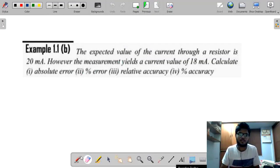Now, you do this homework problem. Expected value of a current through a resistor. See carefully. Expected value given as 20 milli amperes. However, measurement yields 19. It means it is our measured value. I have given a hint. Now, try. Calculate absolute error, percentage error, relative accuracy and percentage of accuracy.